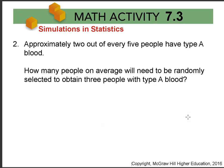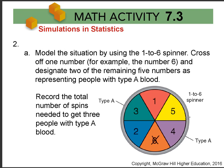Now in number two, we do a different type of simulation. Approximately two out of every five people have type A blood. So how many people on average will need to be randomly selected to obtain three people with type A blood? Pause and make a guess. Then model the situation using a 1 to 6 spinner — you can use a 1 to 5 virtual spinner as well.